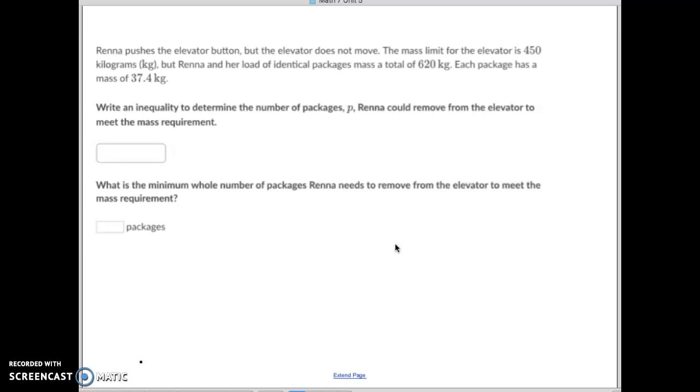Next one, let's do one more example. Rena pushed the elevator button, but the elevator does not move. The mass limit for the elevator is 450 kilograms. So our limit for this thing is 450 is the greatest, it could equal it, 450 is the limit on the elevator. But Rena and her load of identical packages have a mass of 620. So they're at 620.